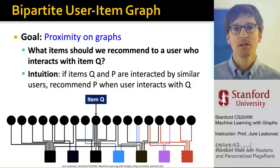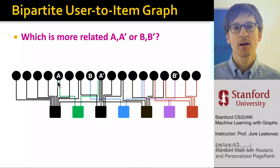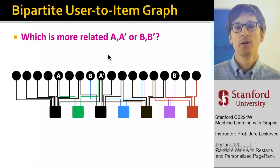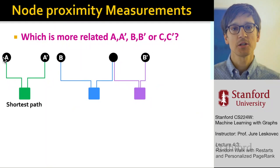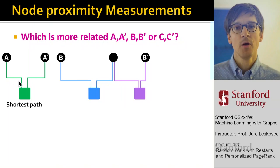For example, if I have this graph with items A, A prime, B, and B prime, the question is which two are more related. One thing to do would be to measure shortest path. A has a shorter path than B to B prime, so A and A prime are more related.